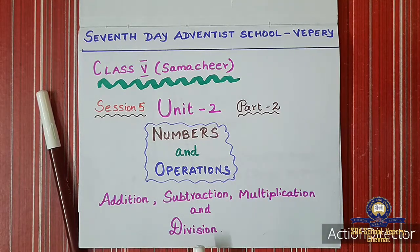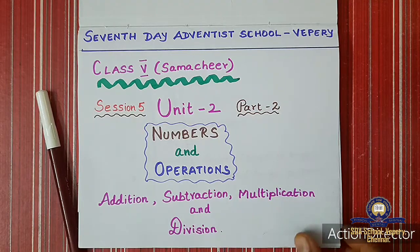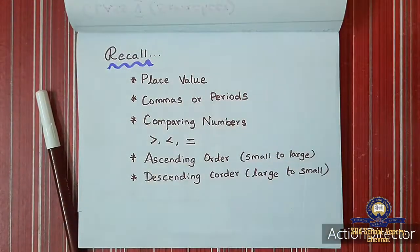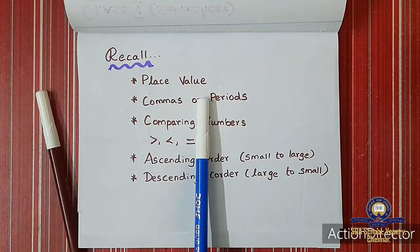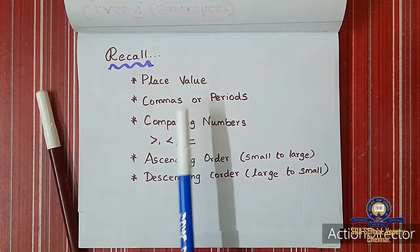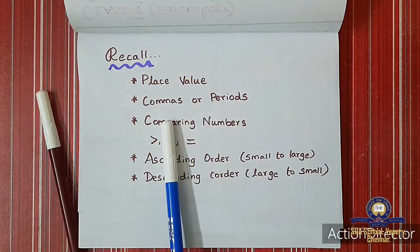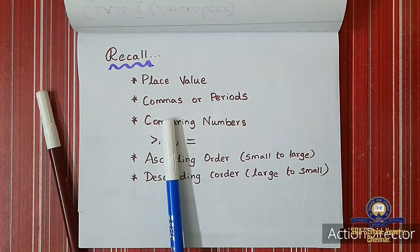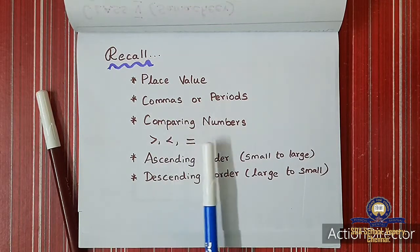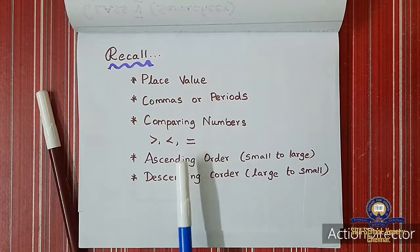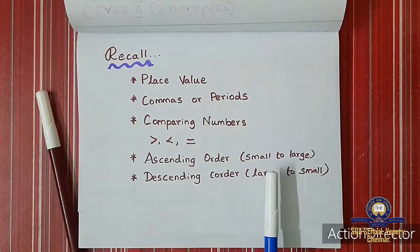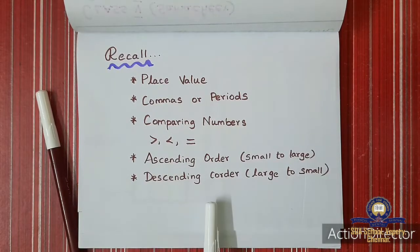Before moving to today's class, we shall recall what we learnt in our previous class. We learnt about place values — the place value of each digit in a number. Then how to put commas or periods: numbers are divided into groups — ones group, hundreds group, thousands group — and we put commas according to those groups. Then we saw comparing of numbers: greater than, lesser than, and equal to. Then ascending order — small to large — and descending order.